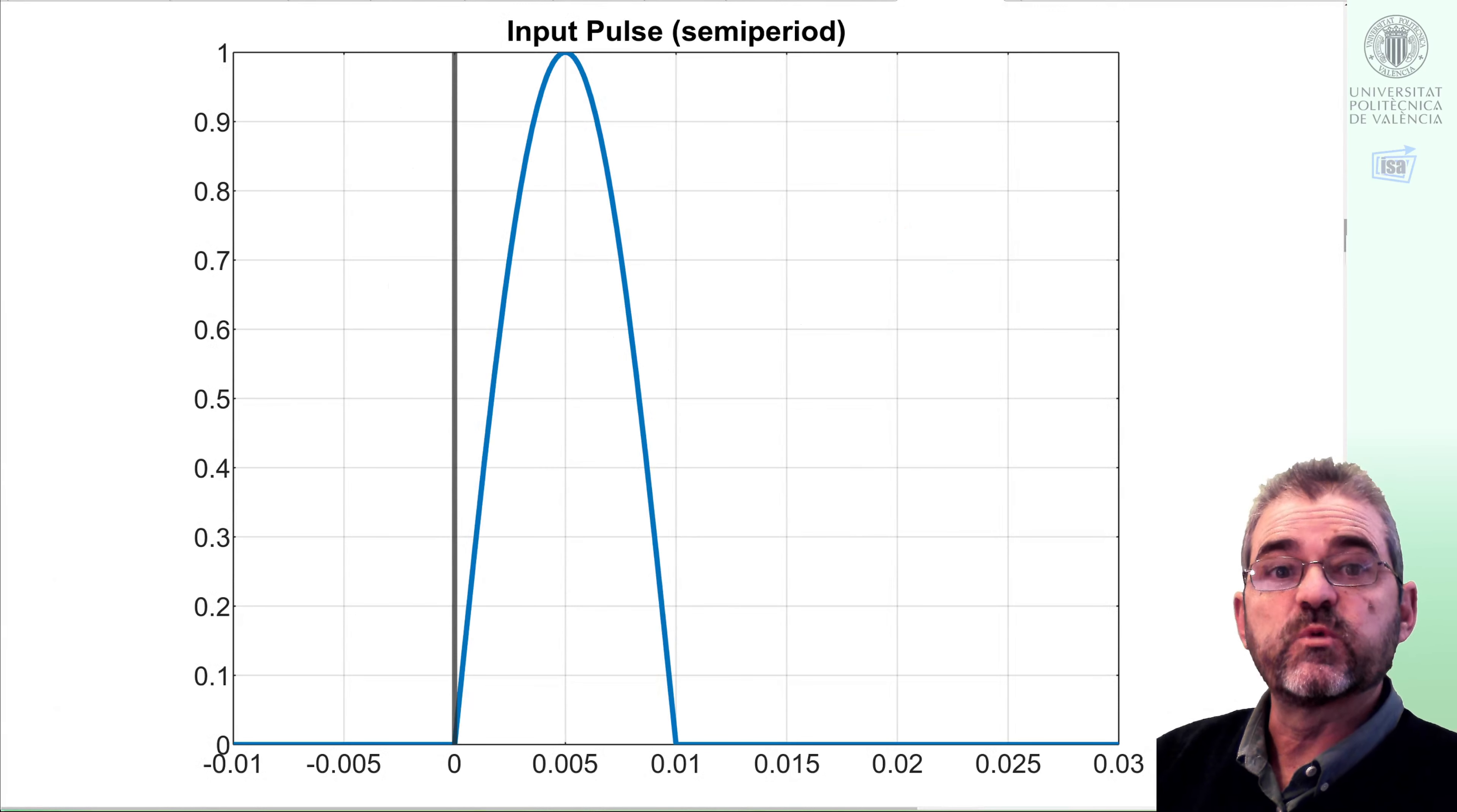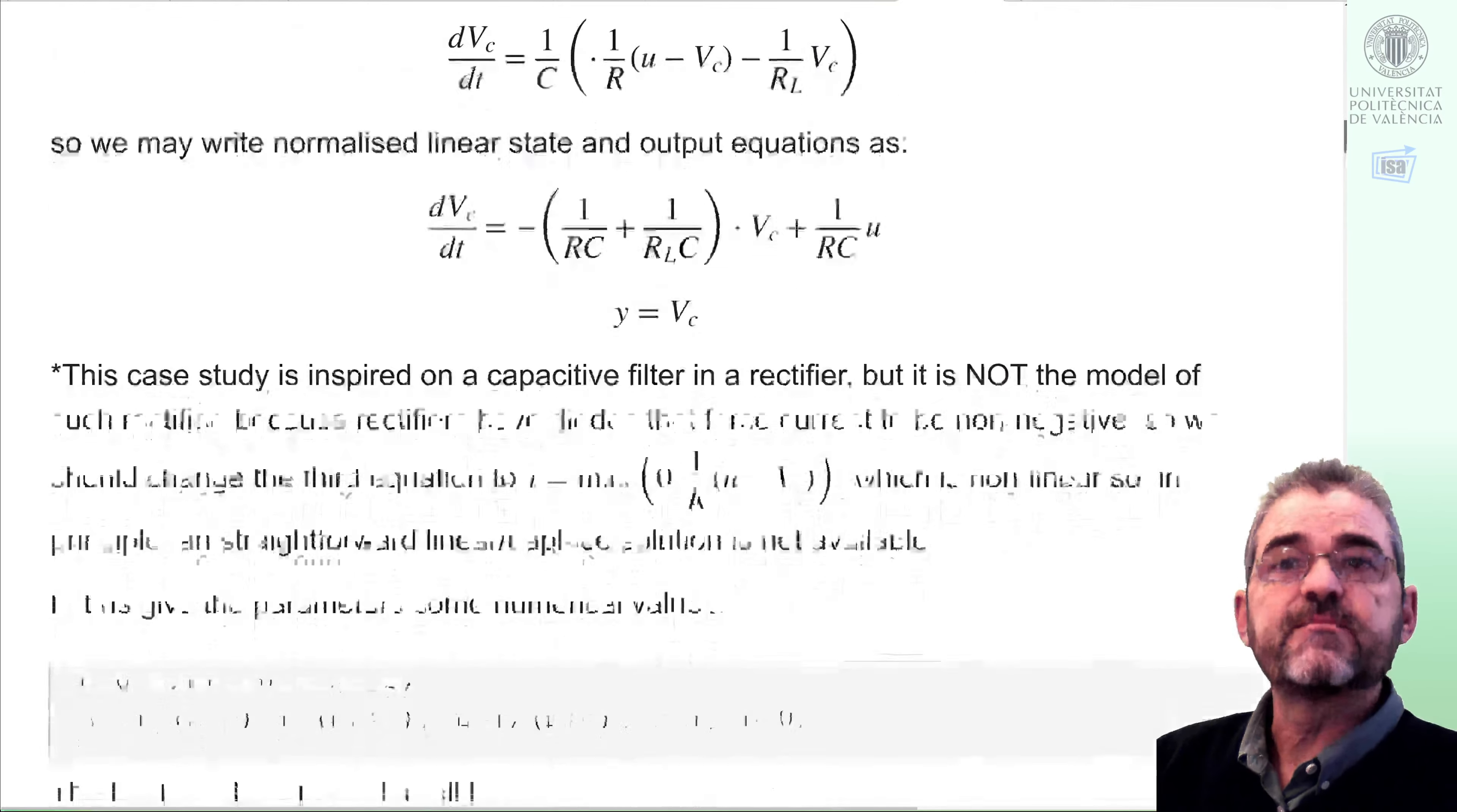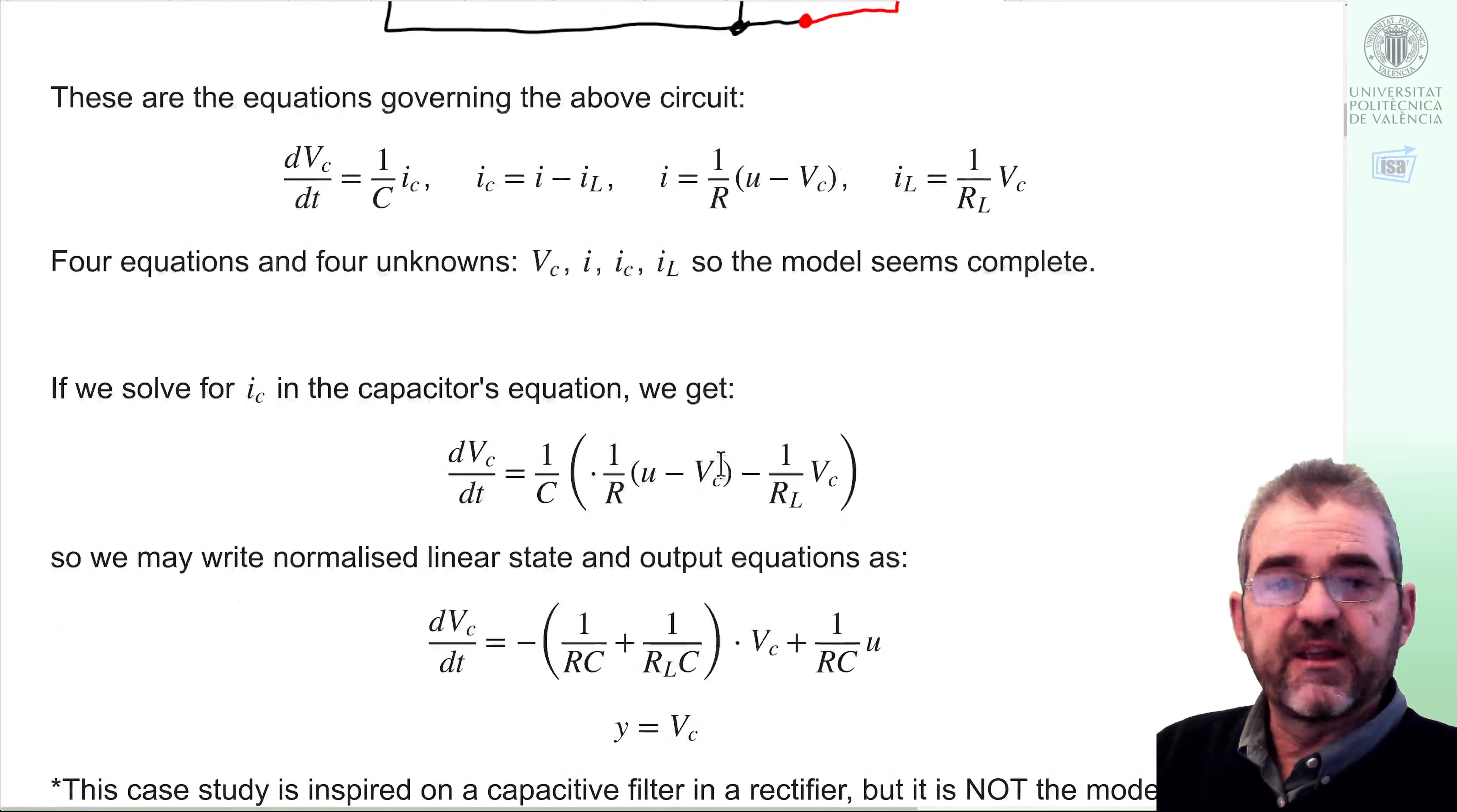The circuit will be subject to an input pulse, inspired in rectifier setups, in which, let's say, alternating current waveforms will be transformed to a train of these sinusoidal pulses. However, actual rectifiers usually have diodes, so this current cannot be negative. So we are not claiming that these equations are the ones to be used in a rectifier, because, for instance, diodes would need some equations like this one I have highlighted, so that current is zero if polarity changes. But, okay, if we forget about rectifiers and diodes, this is the state space representation.